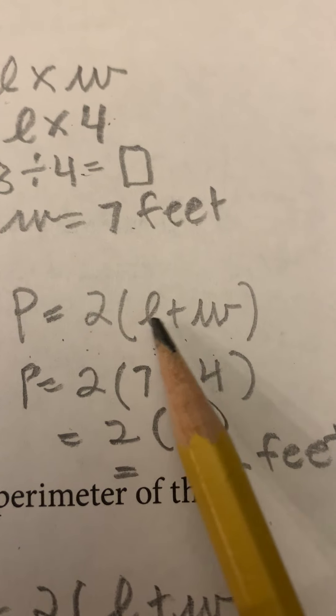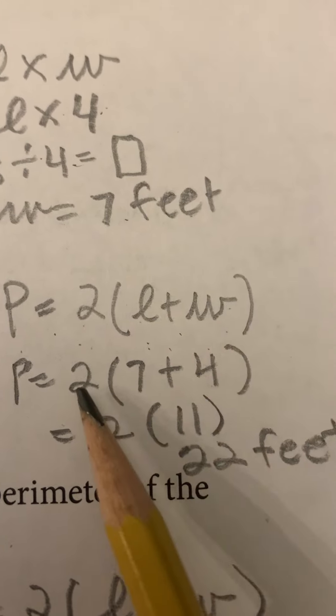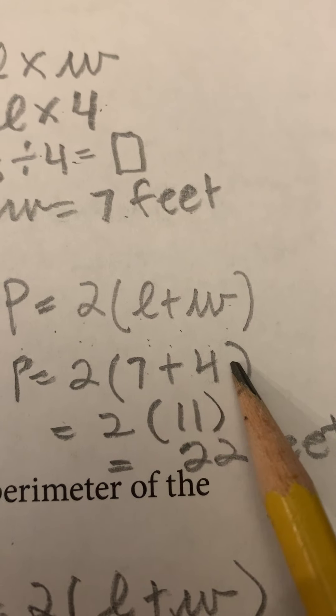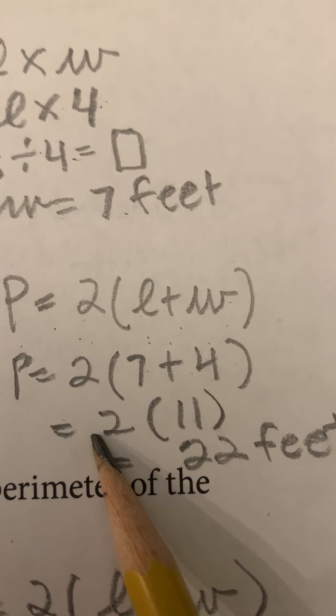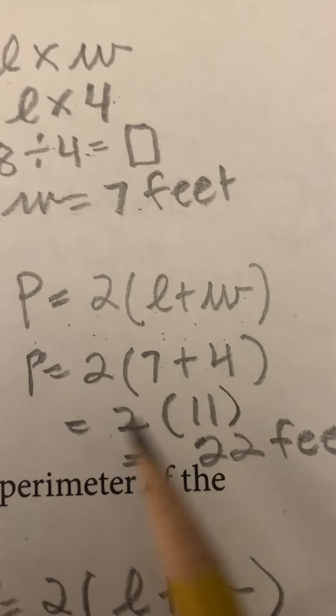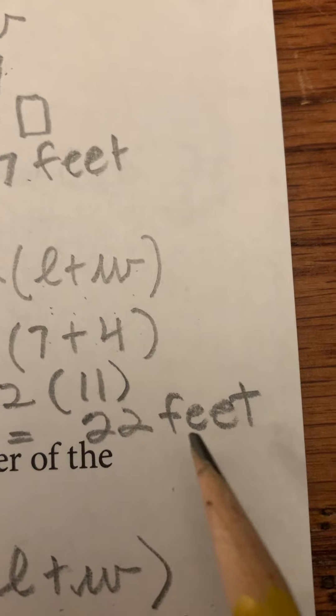Perimeter is two times length plus width. So I have seven and my four. Seven and four together is 11. I have to multiply it by two. I have to double it because I have two lengths and two widths. Two times 11 is 22 feet. And there's my answer.